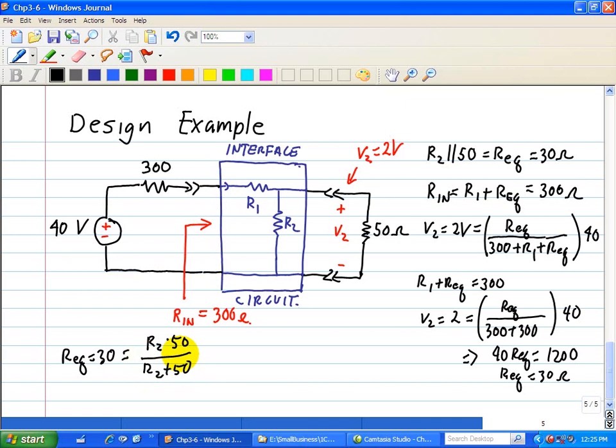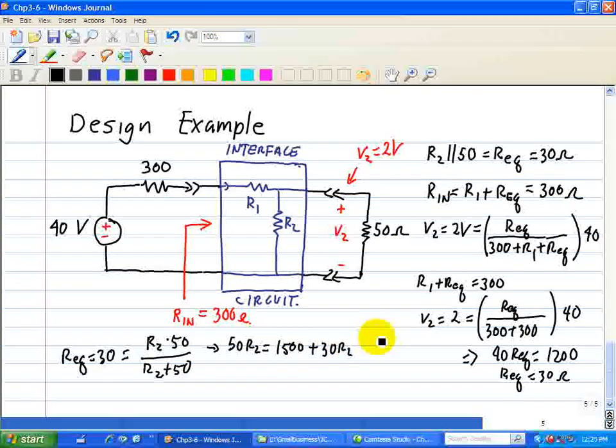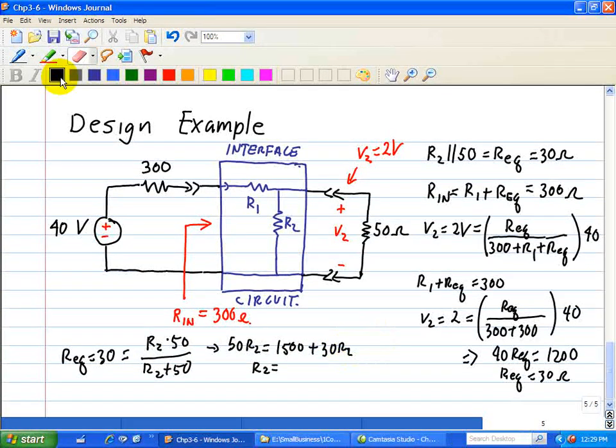When you solve for that, that gives an equation of 50 R2 equals 1500 plus 30 R2. Solving for R2, and this yields R2 equals to 75 ohms.